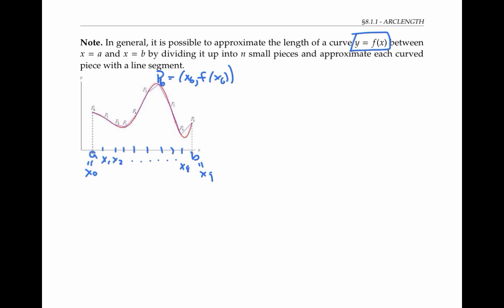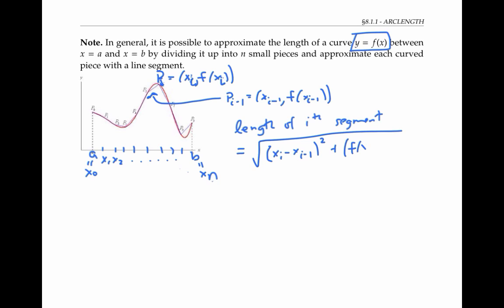More generally, I have n sub-intervals. And I'll label an arbitrary point p sub i. The point before it is then p sub i minus 1. And the length of the ith segment is given by the distance between p sub i and p sub i minus 1. So that's the square root of (x sub i minus x sub i minus 1) squared plus (f of x sub i minus f of x sub i minus 1) squared by the distance formula. The total length of the curve can be approximated by adding the lengths of all these line segments up. So that's the sum from i equals 1 to n of these lengths.